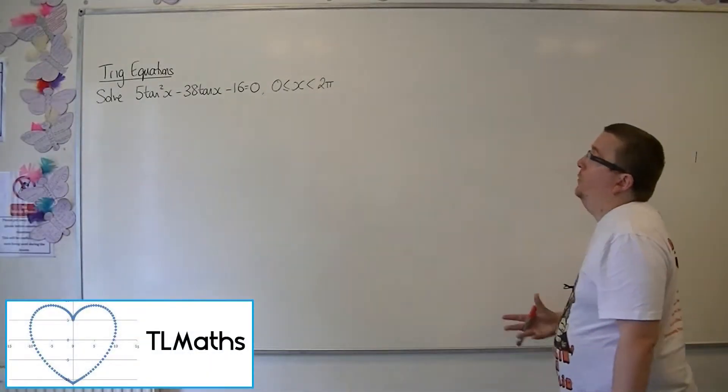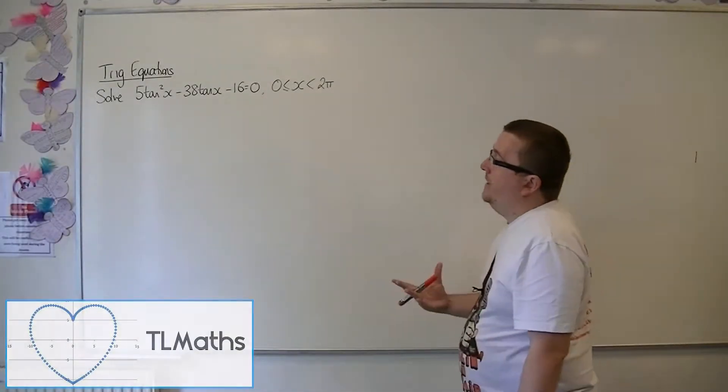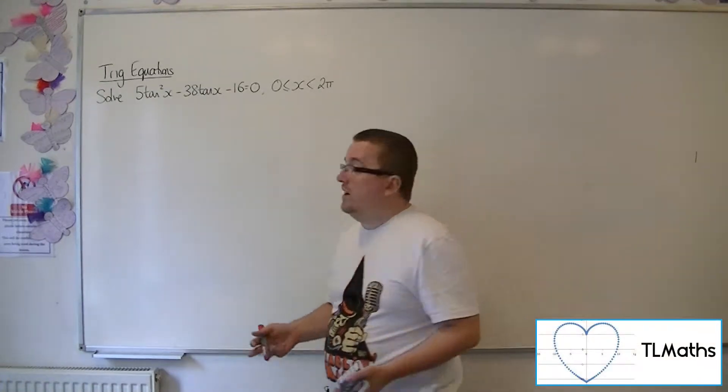Okay, so let's say I want to solve 5 tan squared minus 38 tan minus 16 equals 0 between 0 and 2 pi radians.